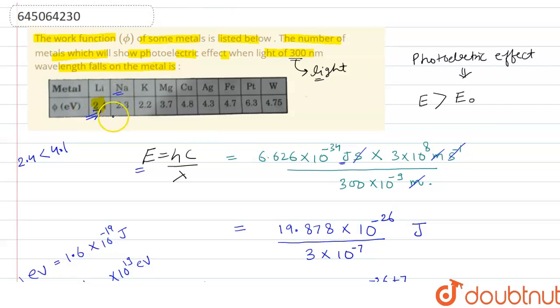Sodium will also show. Potassium will also show because it has 2.2. Magnesium will also show. The rest will not show because their work function is greater than the energy provided by this light. That's why electrons will not eject from these metals. So only one, two, three, four metals will show the photoelectric effect. The answer to this question is 4.